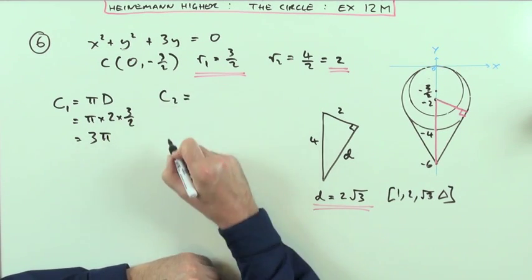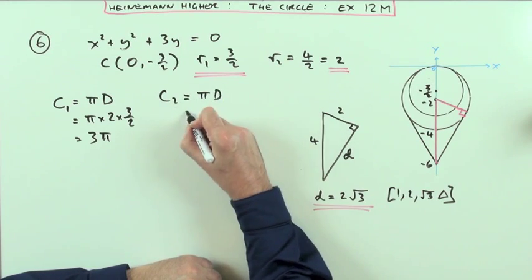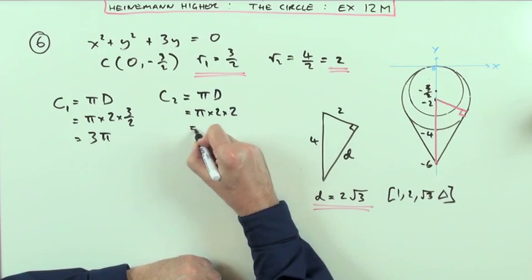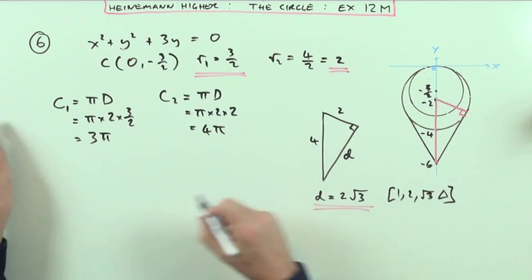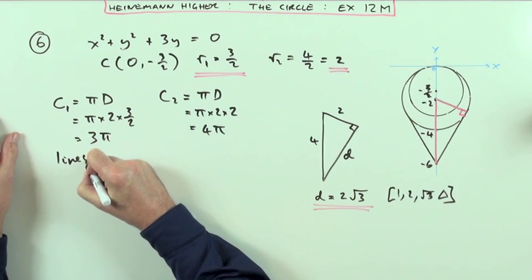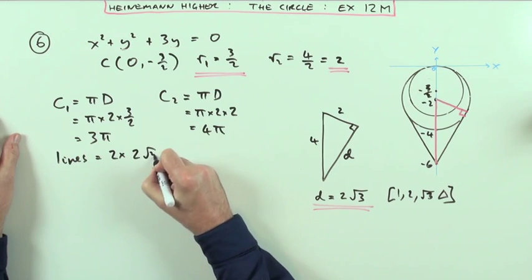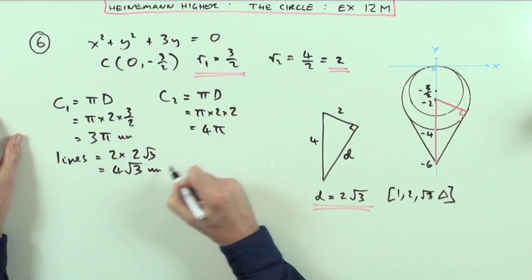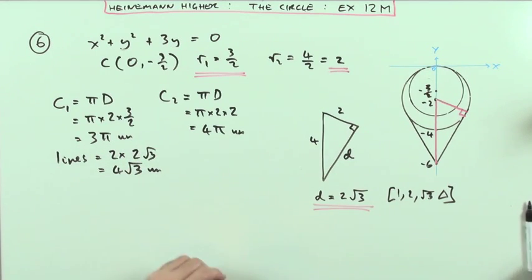What's the circumference of the second circle? It'll be πd as well, so that's going to be π times double the radius, which is 2, so that's 4π. And the total length of those two lines, so the two lines are going to be 2 times 2 root 3, which is 4 root 3, all being in units, because I didn't actually say centimeters anywhere.